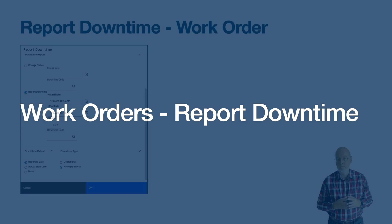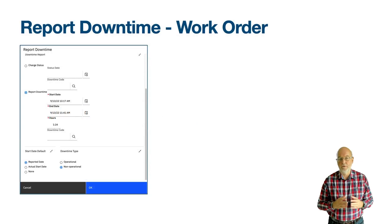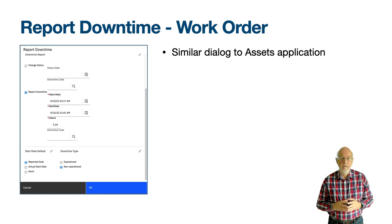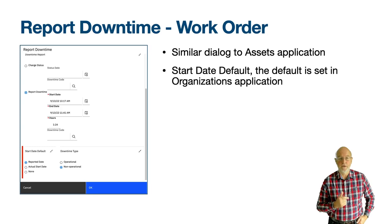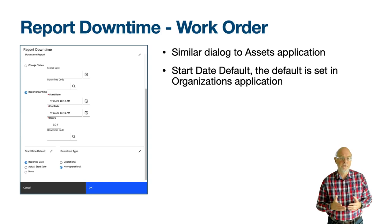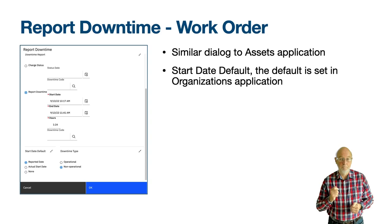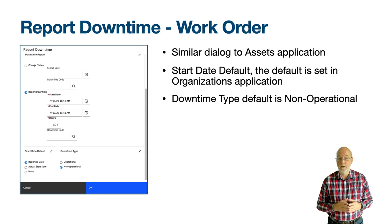The Report Downtime and Manage Downtime History actions will be found in both the Work Order Tracking and Quick Reporting applications. The dialogues are like those found in the Assets application but not quite the same. In the Report Downtime dialogue you have the same two radio buttons: Change Status and Report Downtime. The visual difference is the start date default section at the bottom, which is only accessible when the Report Downtime radio button is active. For Change Status it will be grayed out. There are organisation application settings that define which radio button is the default. The observant of you might notice that the Downtime type defaults to non-operational on a Work Order — it was operational on the Assets application. This is controlled from the library.xml file.